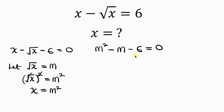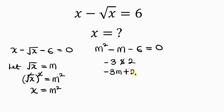We have a quadratic equation that is factorizable. Looking at negative 6, the factors that come to mind are negative 3 and 2, because negative 3 times 2 gives negative 6, and their sum, negative 3 plus 2, gives negative 1, which is the coefficient of the middle term.